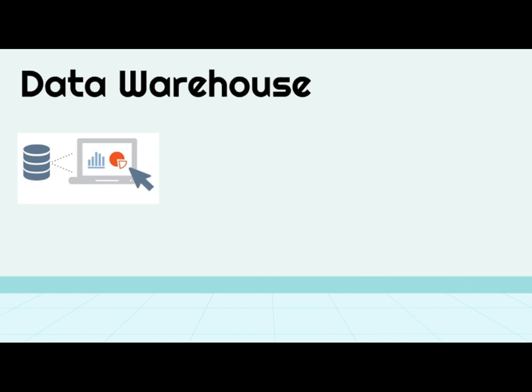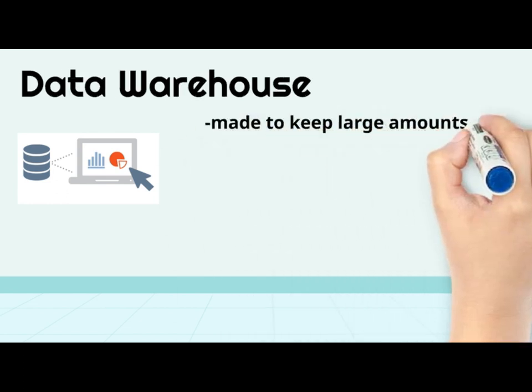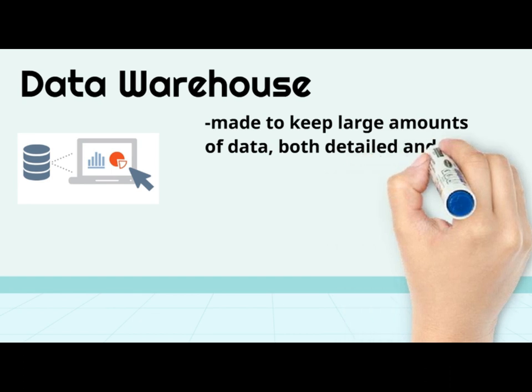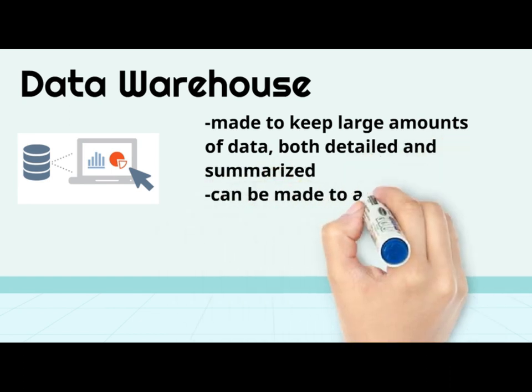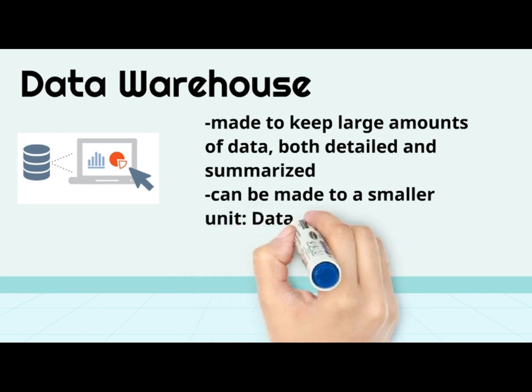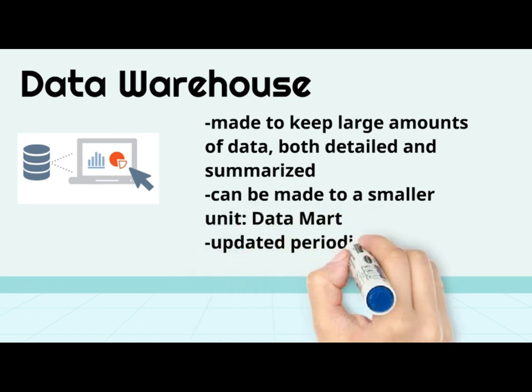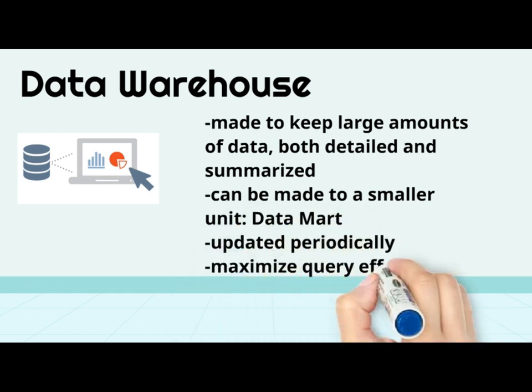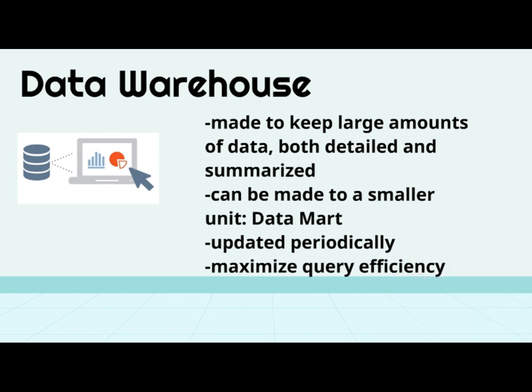A Data Warehouse is a database specifically made to keep large amounts of data, both detailed and summarized. It can be scaled to a smaller unit for specific functions, known as a Data Mart. Data Warehouses and Data Marts are updated periodically to reflect transaction results. They are structured differently than transaction processing databases, which are designed to minimize redundancy and maximize update efficiency, whereas Data Warehouses are purposely designed to be redundant in order to maximize query efficiency.